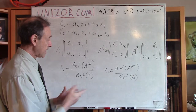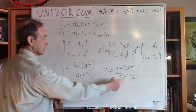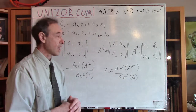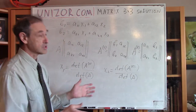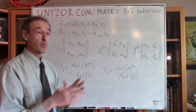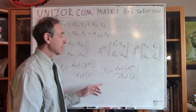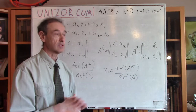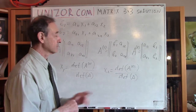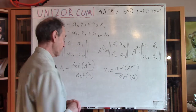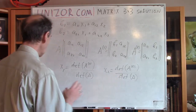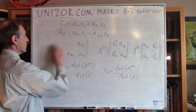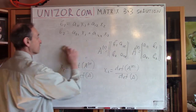By the way, the determinant of A is in the denominator, which implies — as we mentioned before — that a solution exists only if this determinant is not equal to zero. Alright, so this was a preamble, and I would like to address now the system of three equations.